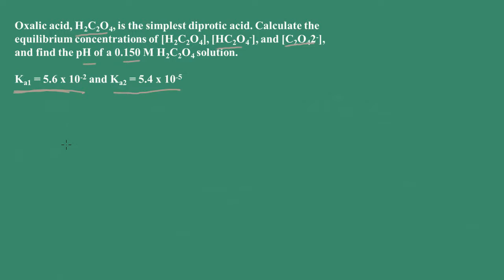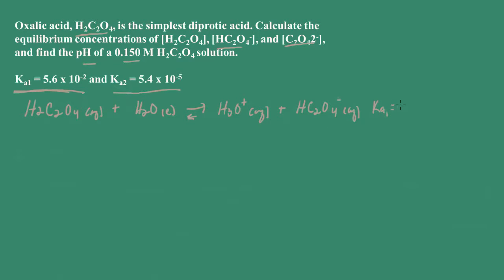Let's write the chemical equation for that first hydrogen. We have oxalic acid in water, and we have this equilibrium between hydronium ion and the hydrogen oxalate. For this, we know that Ka1 is equal to 5.6 times 10 to the negative 2. We need to determine the pH of the solution, which can be determined from the first dissociation.